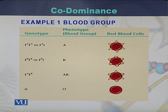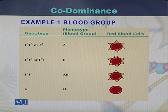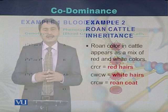In the case of blood group A, blood group B, and blood group O, they can be homozygous or they can be heterozygous.